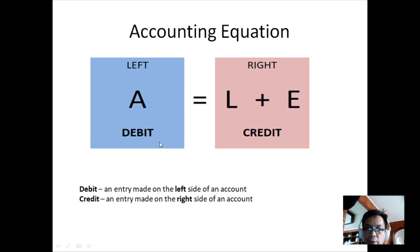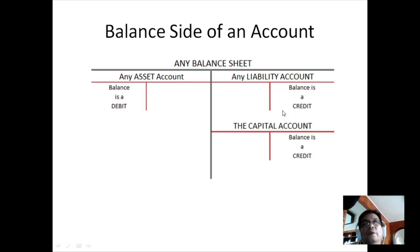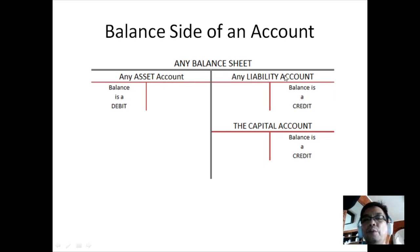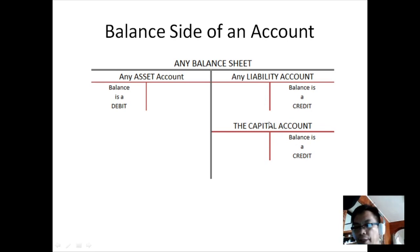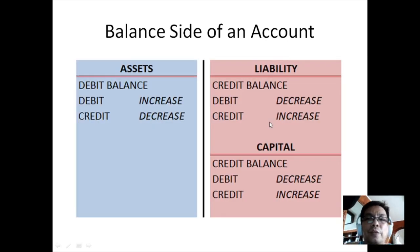This is significant because it gives us a hint about the normal balances of these account types. On a balance sheet, the left side holds assets and the right side holds liabilities and capital. Since assets are on the left, the normal balance for an asset is a debit. For liabilities and capital, the normal balance is a credit.